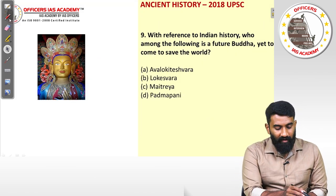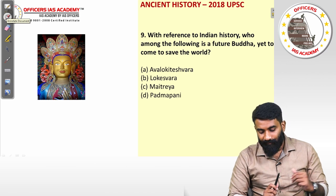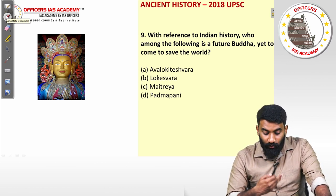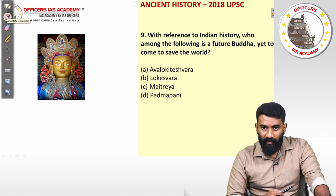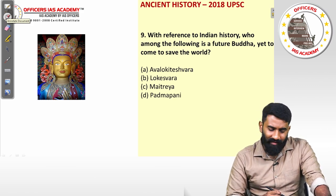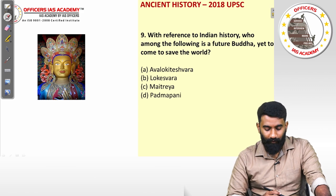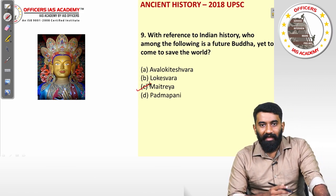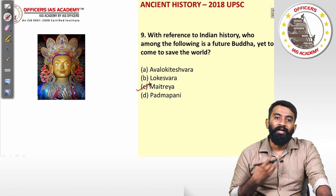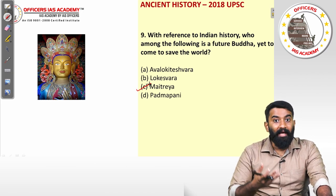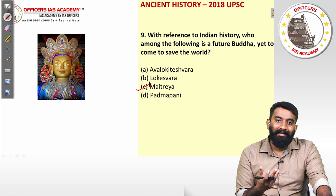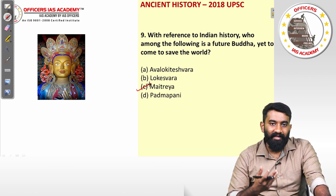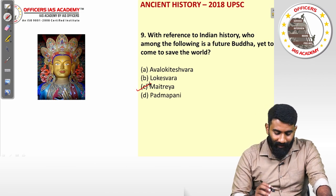Question nine: with reference to Indian history, who among the following is a future Buddha yet to come and save the world? This is a straightforward factual question. The answer is option C: Maitreya. Maitreya is the Buddha who is supposed to come again, like Gautama Buddha, and relieve humans of worldly desires, sorrows, and misery.